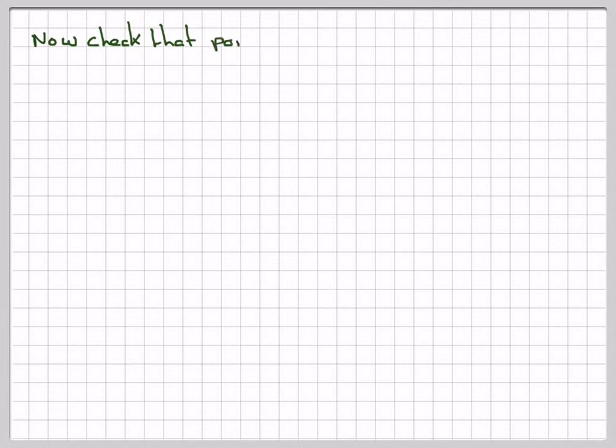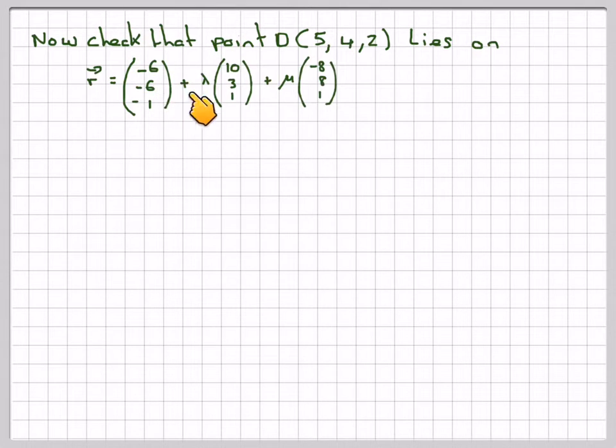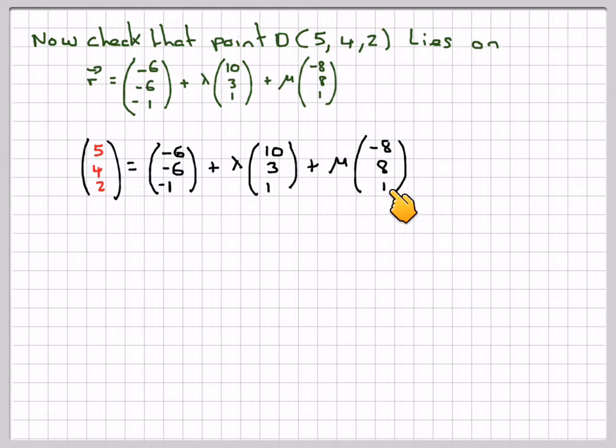Now check that the point D(5, 4, 2) lies on this actual vector equation: (-6, -6, -1), (10, 3, 1), (-8, 8, 1). So we're going to have (5, 4, 2) must be equal to (-6, -6, -1) plus lambda (10, 3, 1) plus mu (-8, 8, 1).